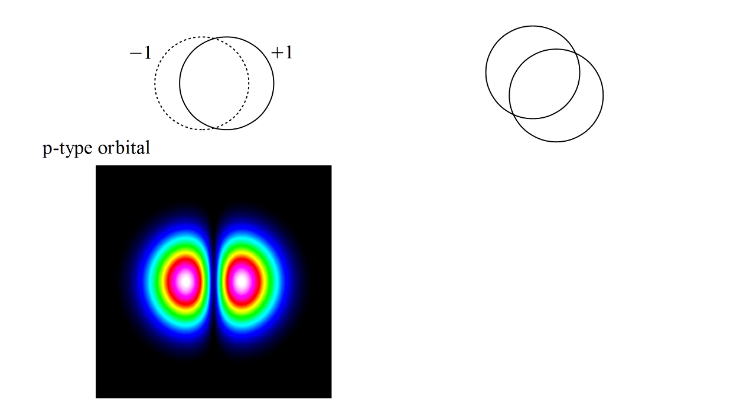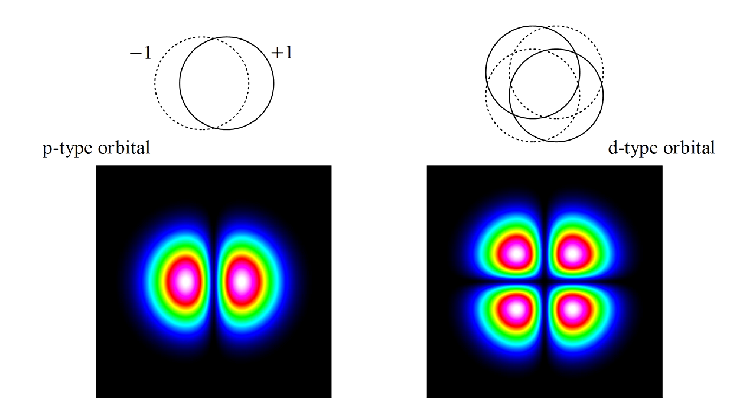A combination of four Gaussians can be used to create a four-lobe d-type orbital. More complicated spatial variations become possible as we add more primitive Gaussians.